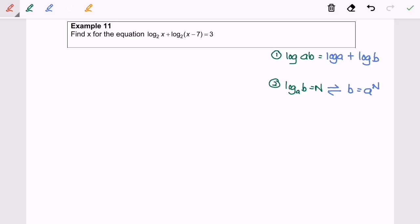Now I'm going to discuss example 11. Find the value of X for the equation log base 2 of X plus log base 2 of (X minus 7) equals 3. First, I'm going to apply rule number 1, which is log base 2 of [X times (X minus 7)] equals 3.